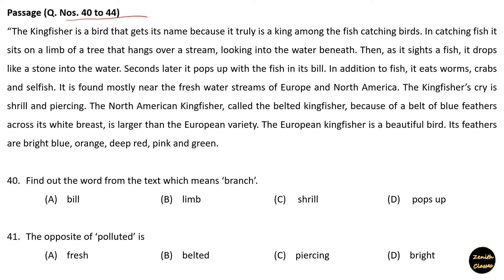In addition to fish, it eats worms, crabs, and shellfish. It is found mostly near the freshwater streams of Europe and North America. The kingfisher's cry is shrill and piercing. The North American kingfisher, called the belted kingfisher because of a belt of blue feathers across its white breast, is larger than the European variety. Question 40: Find the word from the text which means 'branch' — option B: limb.